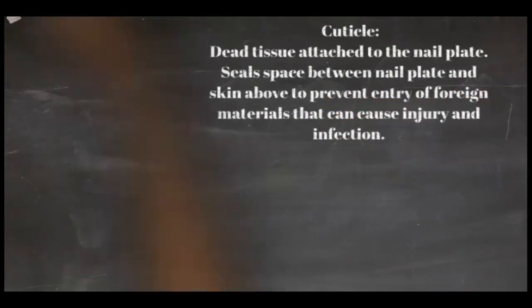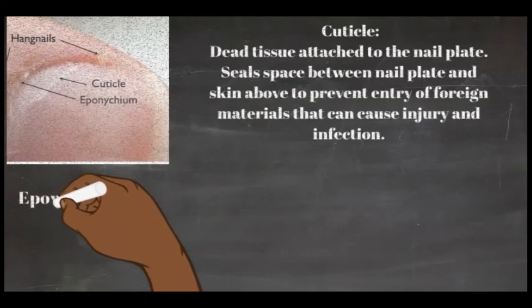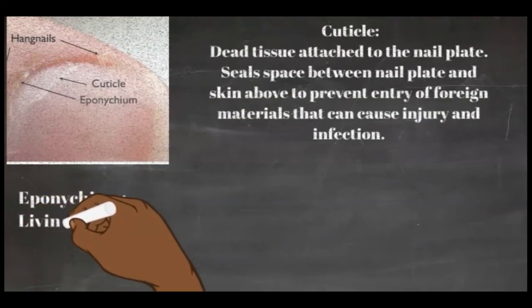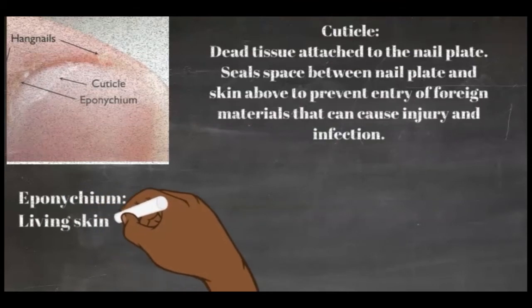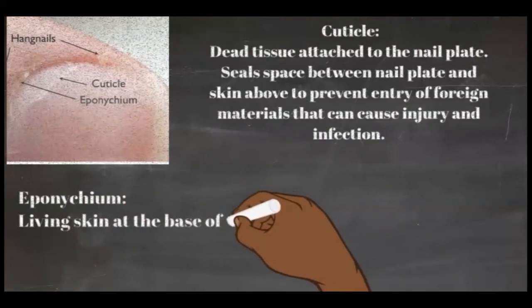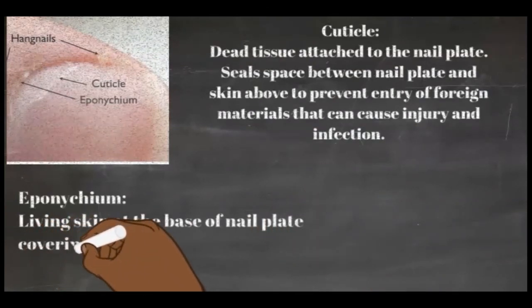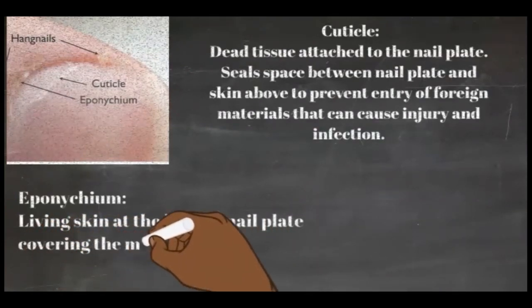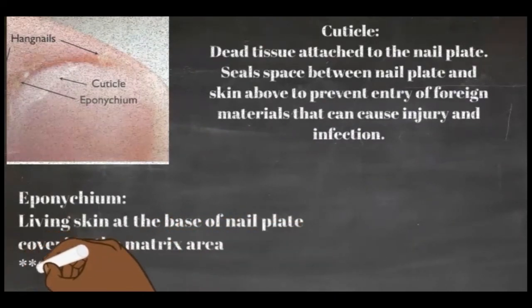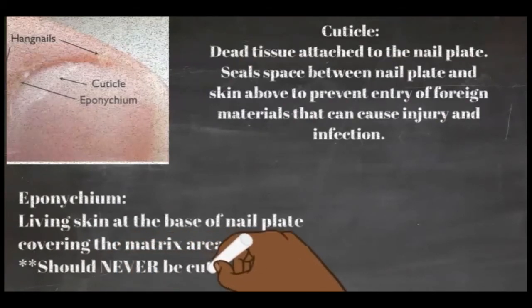Cuticle removers can quickly dissolve soft tissue, and when carefully applied to the nail plate, they speed the removal of stubborn cuticle tissue. The eponychium is the living skin at the base of the nail plate covering the matrix area. The eponychium is often mistaken for the cuticle, but they are not the same — the cuticle is dead tissue adhered to the nail plate, while the eponychium is living tissue. Nail technicians are permitted to gently push back the eponychium, but are prohibited from cutting or trimming any part of it, since it is living skin, even if it appears dry and hardened.